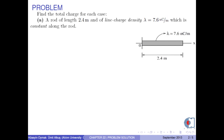Find the total charge for each case. A: A rod of length 2.4 meters and of line charge density lambda equals 7.6 nanocoulombs per meter, which is constant along the rod.